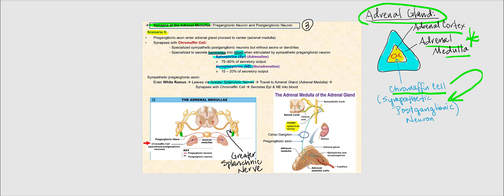Epinephrine was formerly referred to as adrenaline, while norepinephrine was formerly referred to as noradrenaline. Based on the percentages, the major hormone produced by the chromaffin cells in the adrenal medulla is epinephrine, and about fifteen to twenty percent will be norepinephrine. The sympathetic pre-ganglionic axon will enter the white ramus, leave through the greater splanchnic nerve, eventually reaching the adrenal medulla, upon which it will synapse with a chromaffin cell. These axons of the sympathetic pre-ganglionic neurons bypass the celiac ganglion — one of the collateral ganglia associated with the sympathetic division.